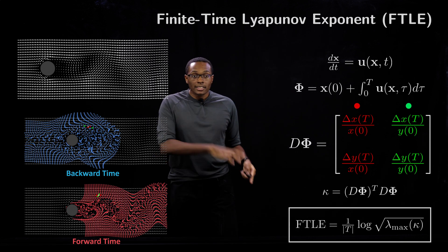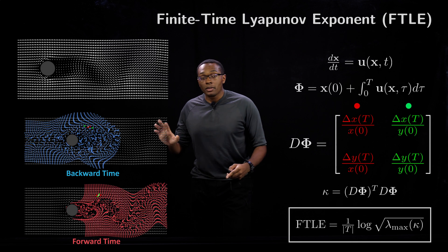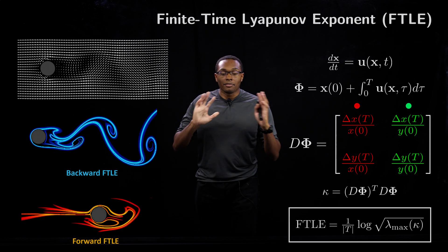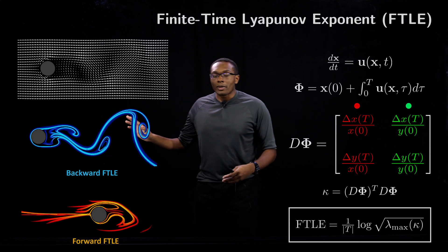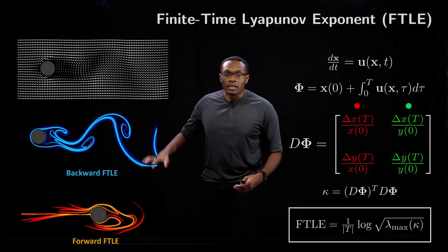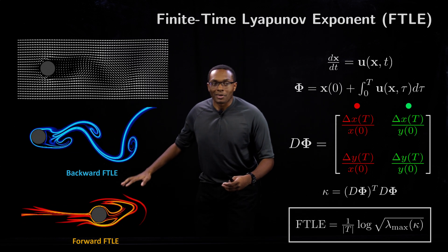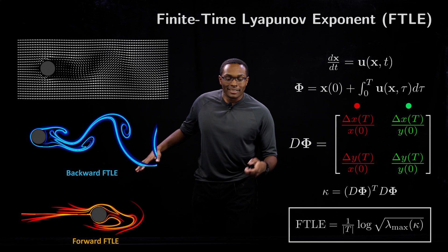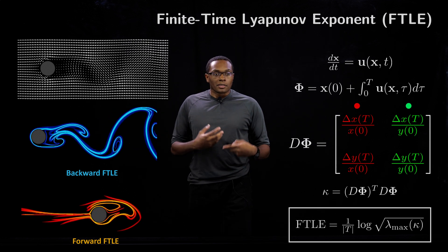This is the FTLE and we can compute this everywhere in the flow field. If we do that, we can get what we call our attracting manifold or our backward FTLE, and we can also get our repelling manifold or our forward FTLE.